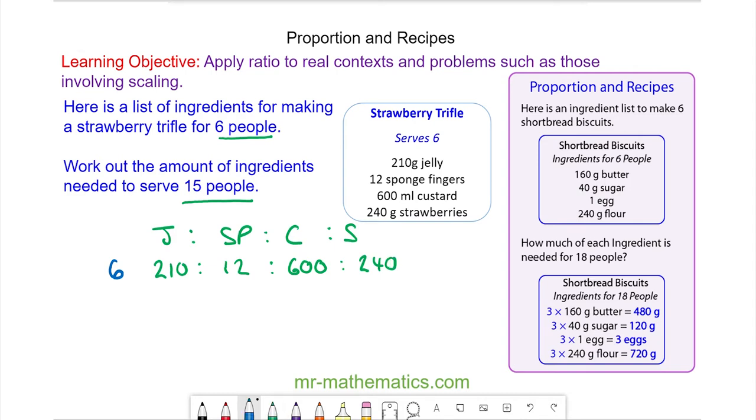To work out these ingredients for 15 people, I'm going to work them out for one person first. I can do this by dividing six by six to make one, and multiplying one by 15 to make 15. I do the same to every ingredient: divide it by six and multiply it by 15.